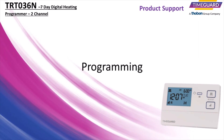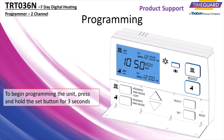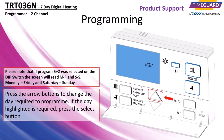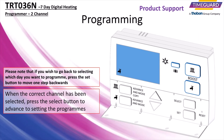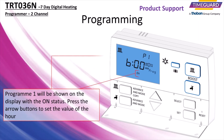Programming your device. To begin programming the unit, press and hold the set button for 3 seconds. Press the arrow buttons to change the day required to program. If the day highlighted is required, press the select button. Select which channel is required for programming using the arrow buttons. When the correct channel has been selected, press the select button to advance to setting the programs. Program 1 will be shown on the display with the ON status.